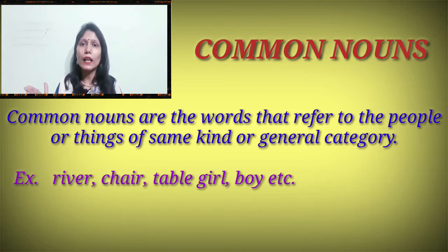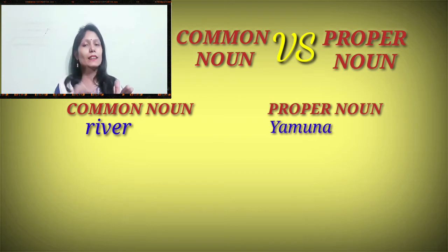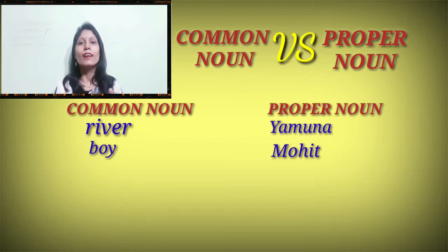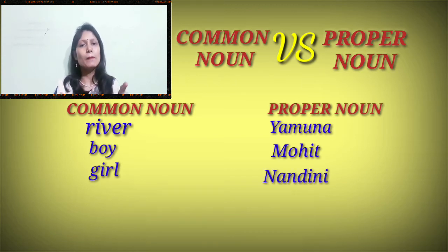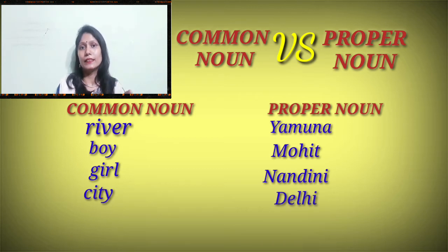What's the difference between proper noun and common noun? When I say river, it's a common noun. But when I say Yamuna, it's a proper noun because it's a name of a river. When I say boy, it's a common noun. But when I say Mohit, it's a proper noun because it's a name of a boy. When I say girl, it's a common noun. But when I say Nandini, it's a proper noun because Nandini is a name of a girl. When I say city, it's a common noun. But when I say Delhi, it's a proper noun because it's a name of a city.